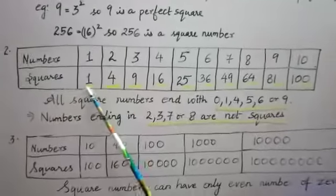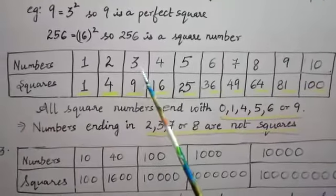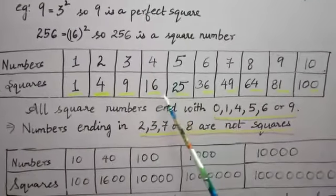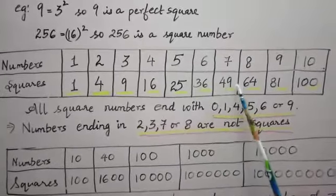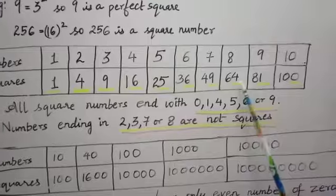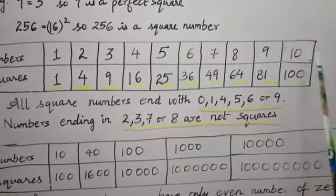Now, 1 square is 1, 2 square is 4, 3 square is 9, 4 square is 16, 5 square is 25, 6 square is 36, 7 square is 49, 8 square is 64, 9 square is 81 and 10 square is 100.